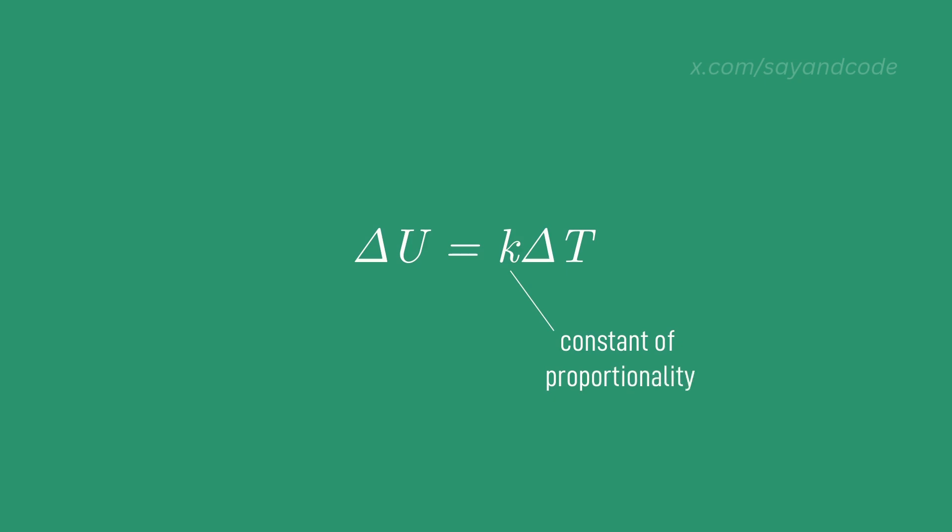By doing experiments, later scientists were able to discover that this constant of proportionality is equal to m Cv, where m is the mass of the system and Cv is the specific heat at constant volume. So the change in internal energy is calculated as m Cv delta T.